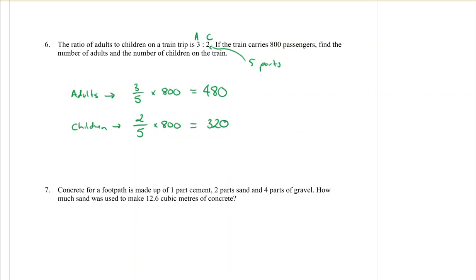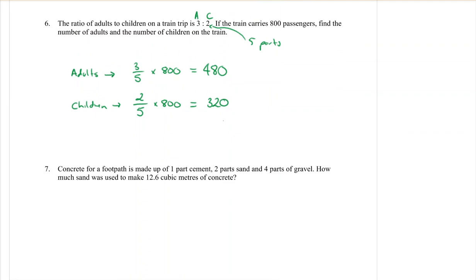You don't have to. I thought that was the first question. Sometimes you will see it written that way and I'm happy for you to write it that way if you do, but I'm also very happy to see it like that: just adults is 480, children is 320.